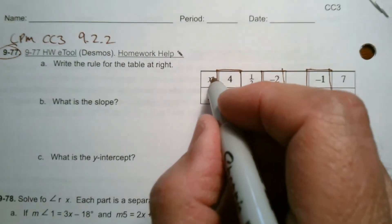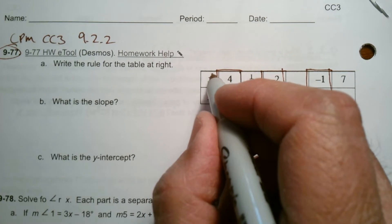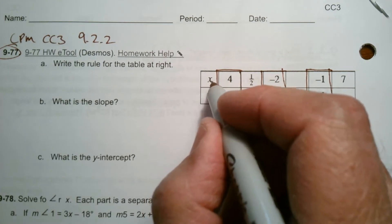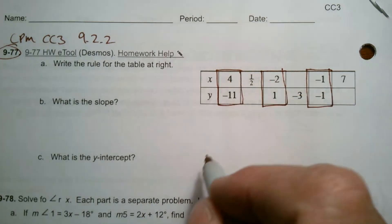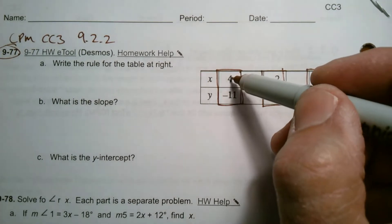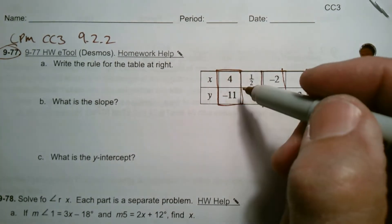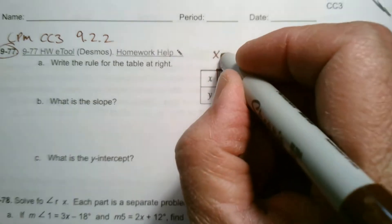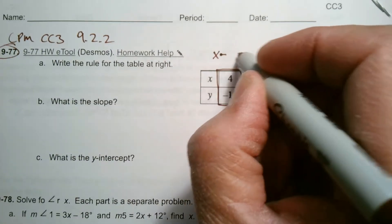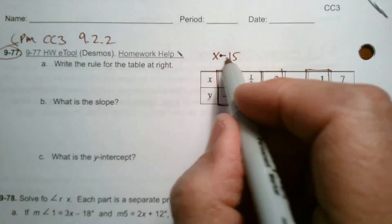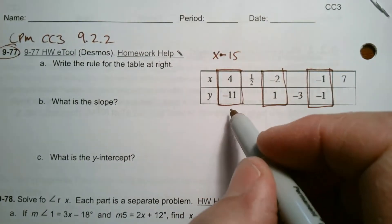Remember, the rule is I am doing something to this independent variable to get the dependent variable. I'm doing some math here. So I look first and say, how can I go from 4 to negative 11? Well, I could take that x, which is the 4 in this case, and subtract 15. 4 minus 15 is negative 11. So that could be the rule, but let's check it.